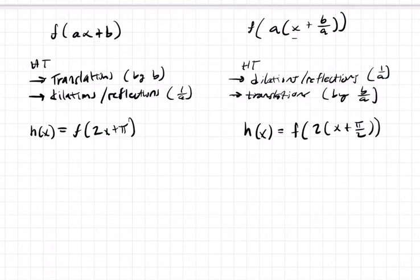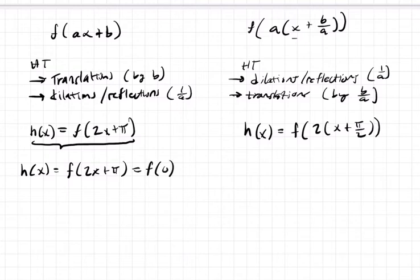So this is, on the left here, telling me I want to find out the inputs for h of x, which equals f of 2x plus π, when it equals f of 0. Now, f of 0 on the cosine function just equals 1. So if I know the output is 1, I could figure out what input I had to put into h to get an output of 1. In other words, when does 2x plus π equal 0?